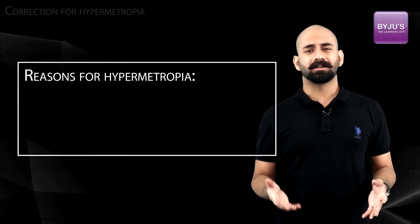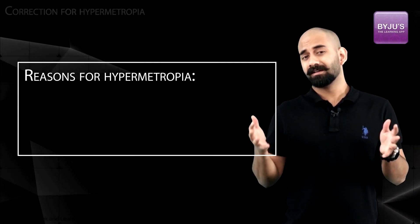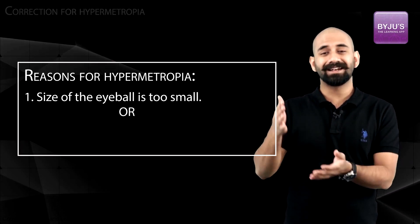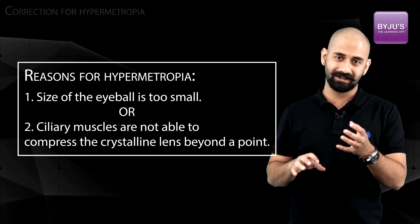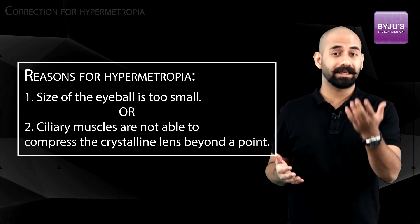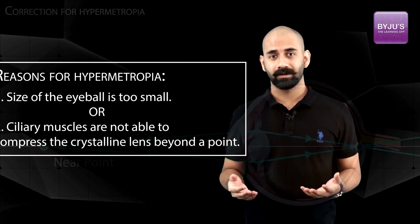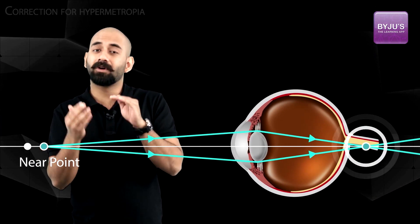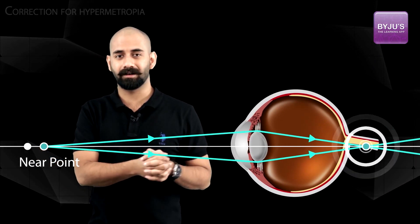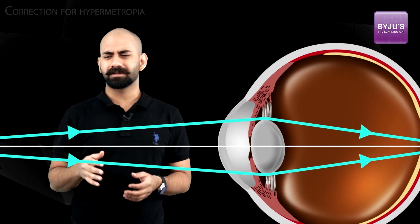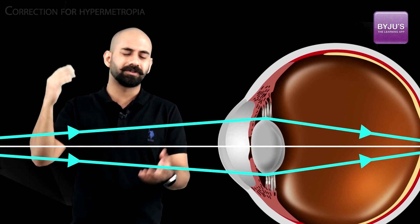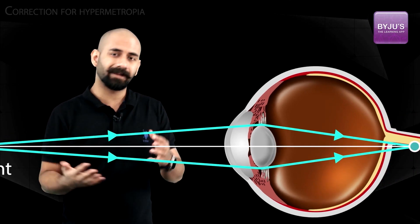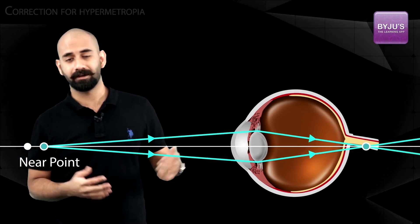Hypermetropia occurs mainly because the eyeball is too small, so the image naturally forms behind the retina, or because the ciliary muscles cannot compress the crystalline lens beyond a certain point — again causing the image to form behind the retina.